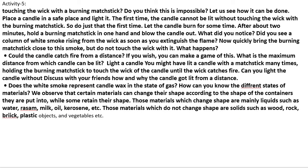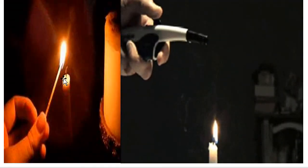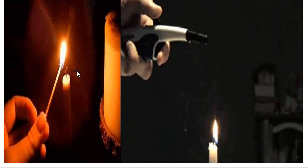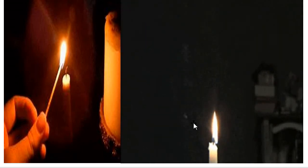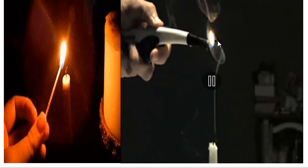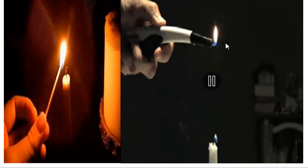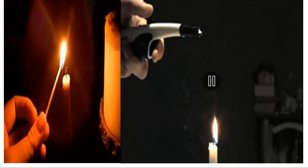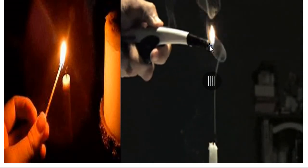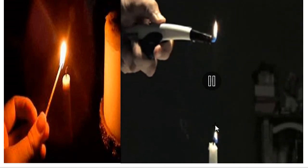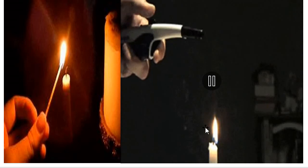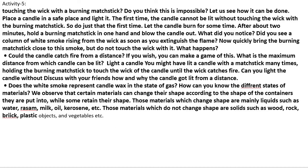Activity 4 is the candle experiment. First, touch the wick of a new candle to light it. After a few minutes, blow it out. While the smoke is still rising, light the candle from a distance — you will observe the fire catching the smoke and relighting the candle from a distance. This is because the wax is evaporating in the form of vapour, which is why it catches fire and the wick gets lit up again.